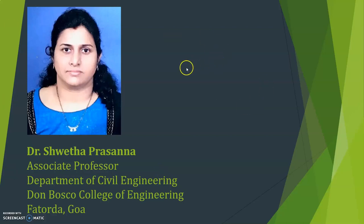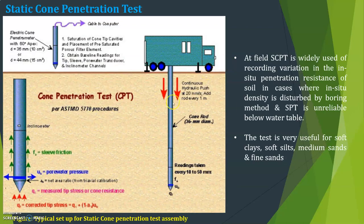Let us discuss about one more type of field test: the static cone penetration test. The cone penetrometer has a 60-degree apex angle and diameter of about 36 mm to 44 mm. The pore water pressure acts here, and friction is developed in the upward direction. QF is the corrected tip stress, equal to QC plus (1 minus A) into UB, where UB is pore water pressure and QC is measured tip stress.